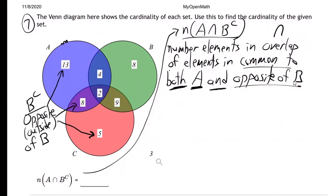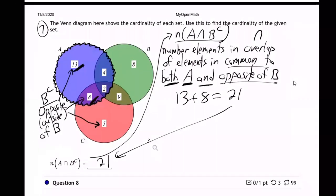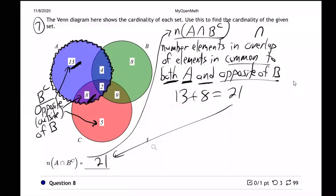So let me highlight this with a little scribbly circle so we can see it really clear. So there's A. What's in common is this guy and this guy. So 13 plus 8, which is 21. So the number in common to A and outside of B is the 13 and the 8. That's going to be 21.